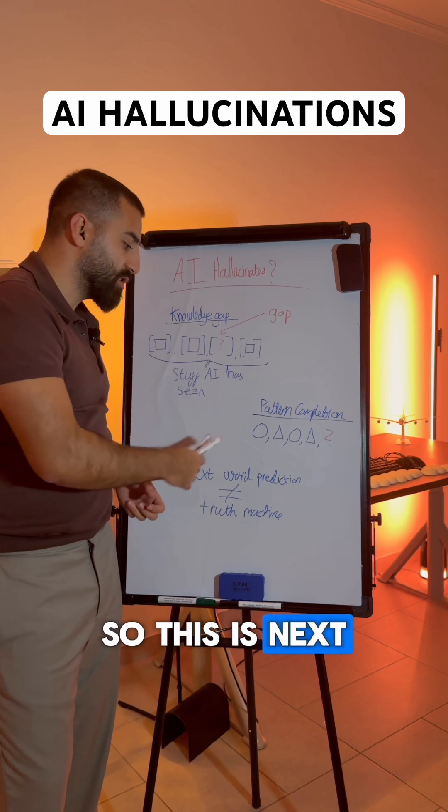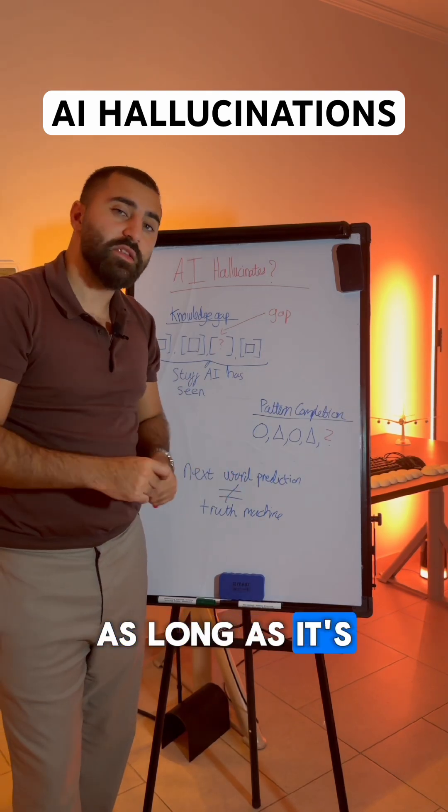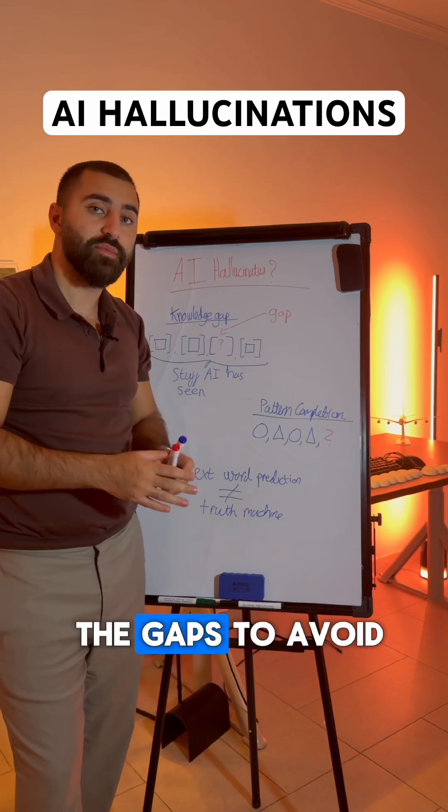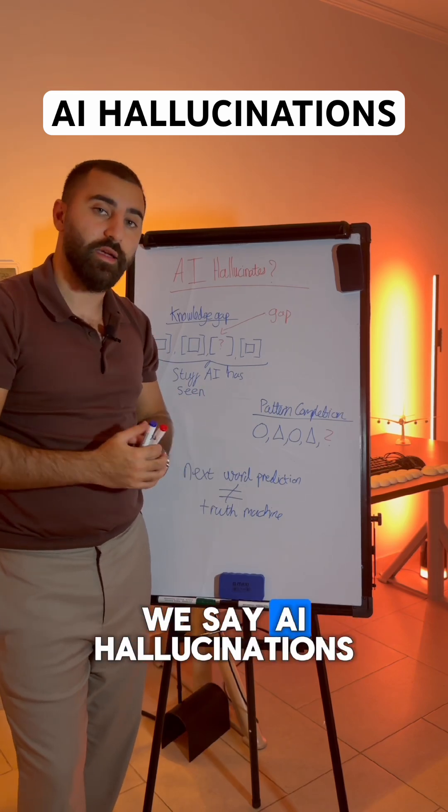So this is next word prediction. Therefore it is not a truth machine. As long as it's built to keep talking, it will fill in the gaps to avoid the silence. So that is what we're talking about when we say AI hallucinations.